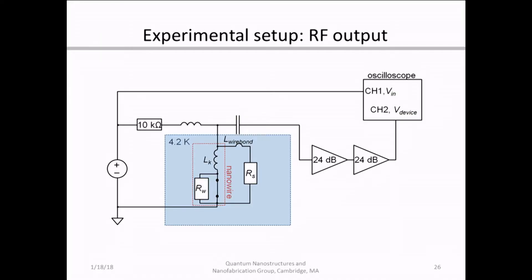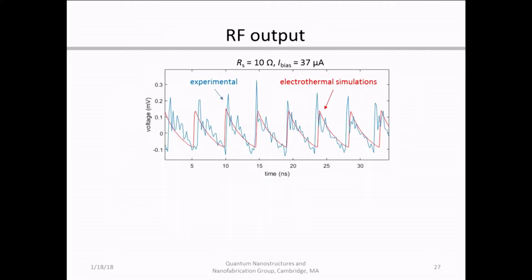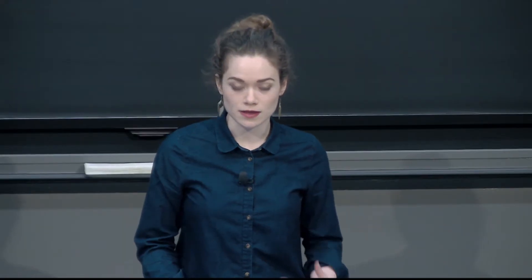We first looked at the high-frequency RF output of our device by dunking it in liquid helium at 4.2 Kelvin and amplifying the RF output of the biased device. The experimental data, shown in blue, was obtained with the device shunted with 10 ohms and biased just above its critical current at around 37 microamps. The period of the experimental oscillation was quite slow — around 4.2 to 4.6 nanoseconds — much slower than what you obtain in a Josephson junction, which was the first indication that these oscillations were still thermal. Shown in red is a comparison to electrothermal simulations done in LT-SPICE, and the good agreement indicates a thermal mechanism at play with nothing coherent like a Josephson junction.